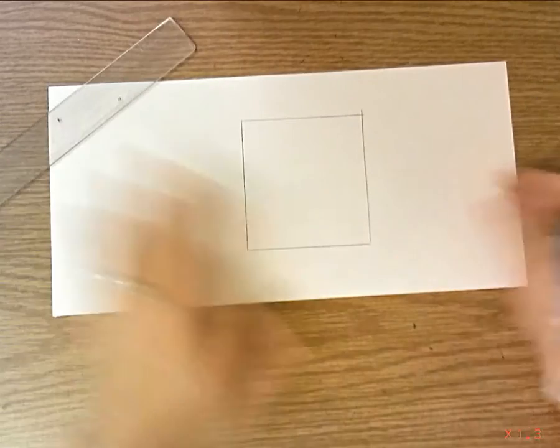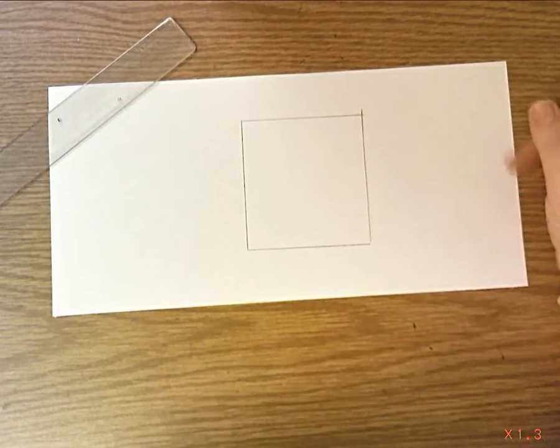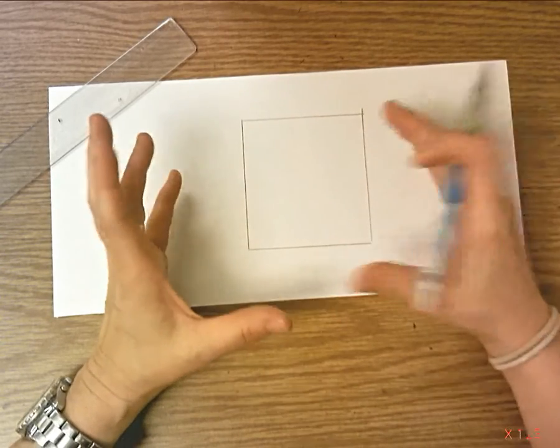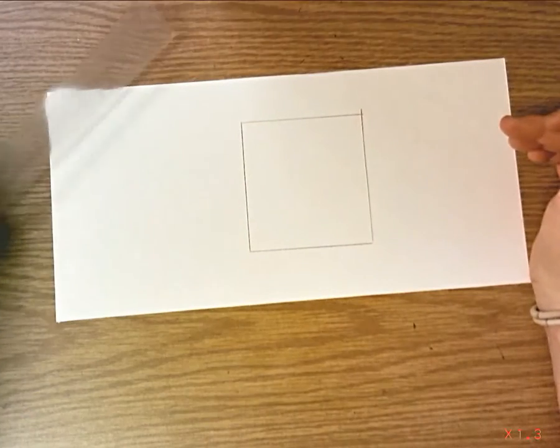So you can eyeball it or you can ask me for a square pattern. I can give you a tagboard pattern that you trace around. But when you draw it on your own, you have control of the size of square that you draw. If you use one of my tagboard patterns, you might not have the exact same size that you want.